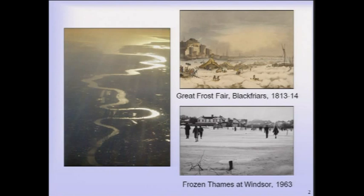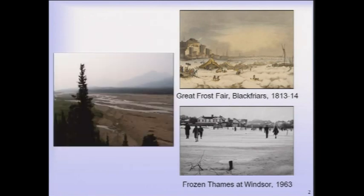You don't have to go back too far — certainly into the 1800s, or even back to 1963, easily within living memory — where we've had periods where the Thames looked rather different. Here we've got an artistic depiction of the Great Frost Fair at Blackfriars in the early 1800s, and the frozen Thames at Windsor in the 60s. These are short-lived periods of cold climate. Going back into the Middle Ages, into the Little Ice Age, we see much more sustained periods of cold, where the river would have altered from a meandering river to a braided river wandering across a bare, often treeless floodplain.